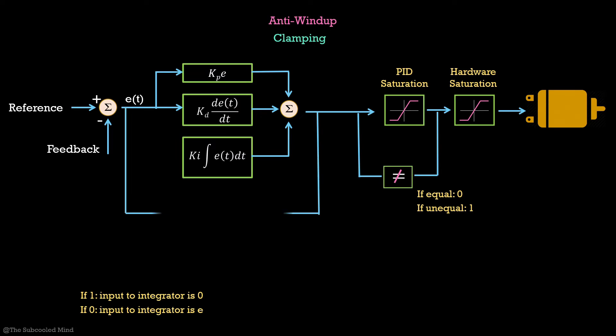We multiply the error and the output of the PID block and check whether it is positive or negative. If the sign is negative, that means the error is in opposite direction compared to the output of the integrator. In this case, we do not want to clamp the integrator because the integrator is winding up.